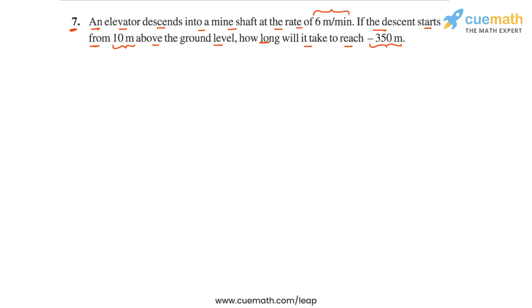So we are given the initial level of the elevator which is 10 meters above the ground and the final level of the elevator which is minus 350 meters or 350 meters below the ground. We are also told that the elevator descends at the rate of 6 meters per minute. Using all this information, we have to find the time of descent.